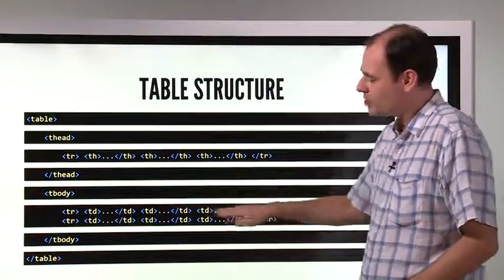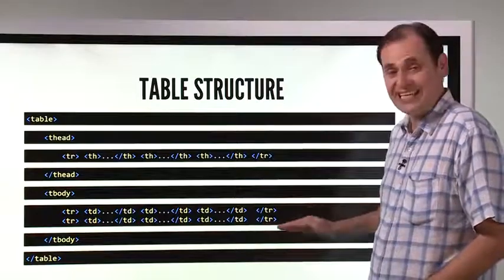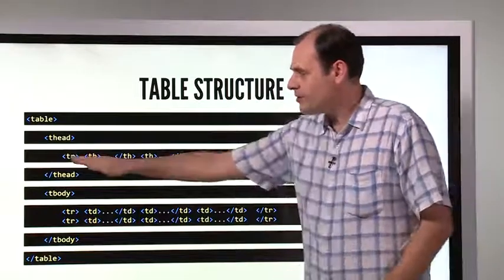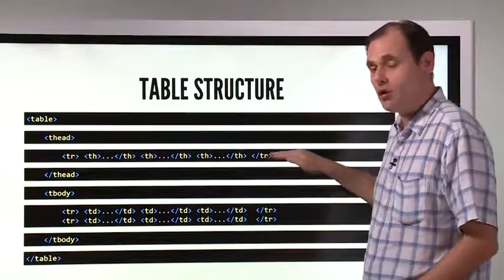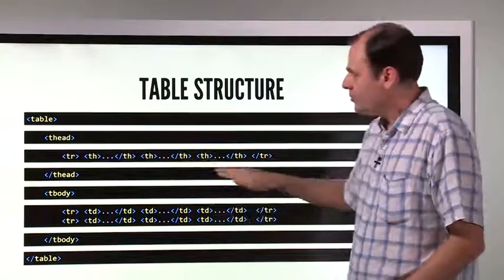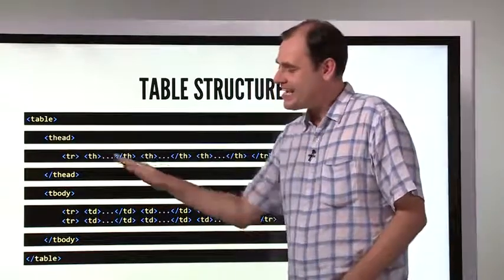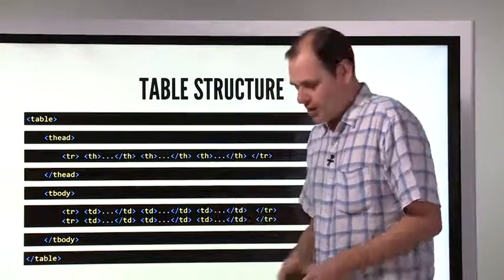One box there, another box, another box. This has three boxes in each row. Same thing with the header, explaining the meaning of each column. They're going to have three boxes as well, except it's not TD here, it's TH.